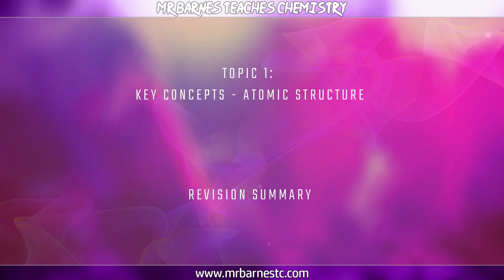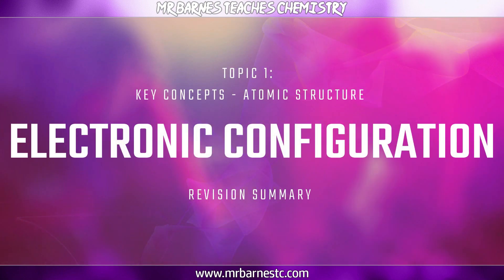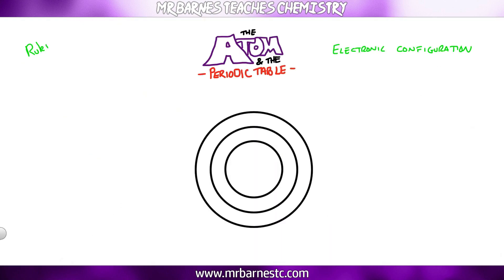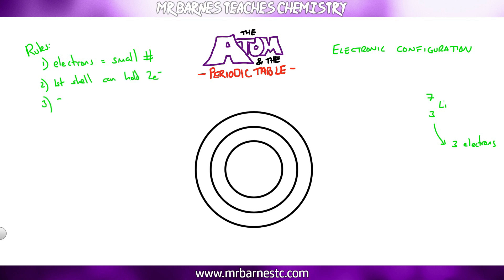The next section looks at electronic configuration — how are those electrons arranged? It's really important to remember that the number of electrons is the small number on the periodic table. Rule two: the first shell can only hold two electrons. Rule three: shells two and three can hold eight electrons each. You won't need to know past that, so just remember two for the first shell and eight for everything else.